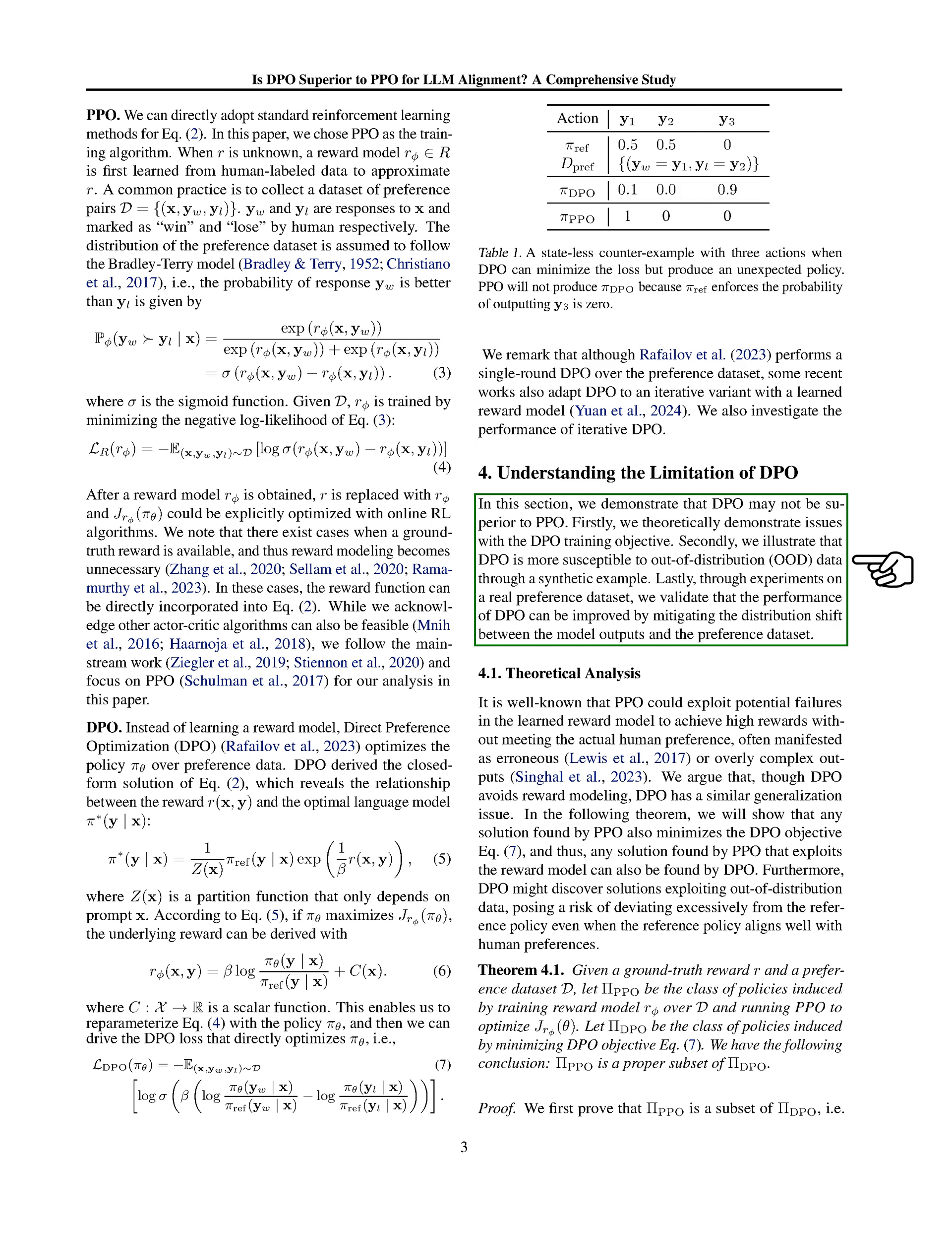Secondly, we will demonstrate that DPO is more vulnerable to out-of-distribution data using a synthetic example. Lastly, we will show through experiments on a real preference dataset that improving the alignment between the model outputs and the preference dataset